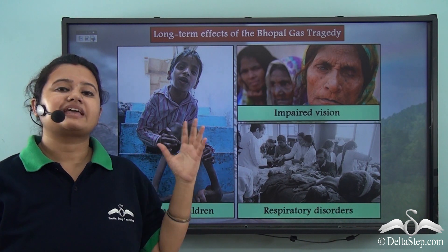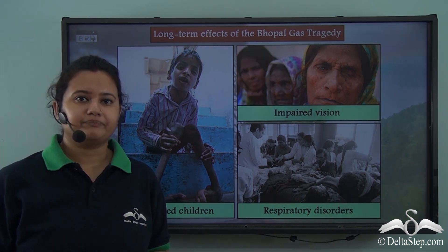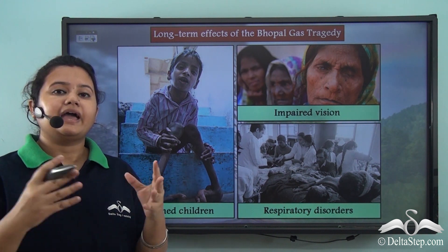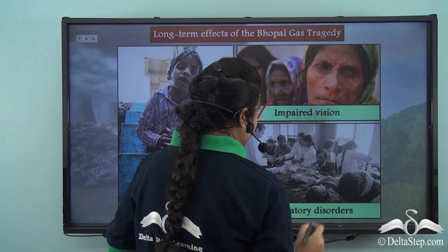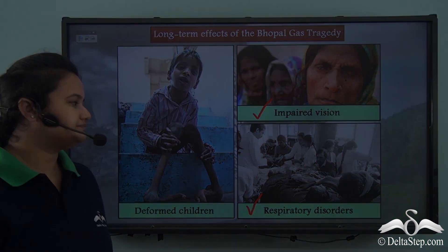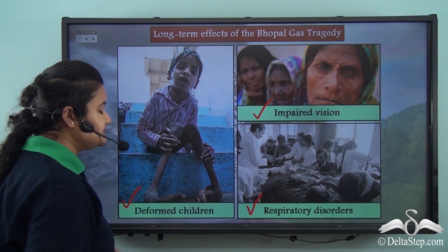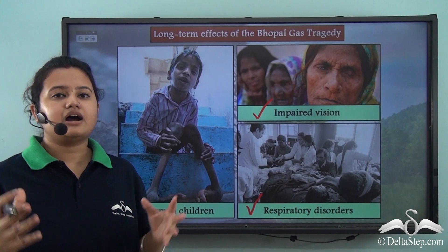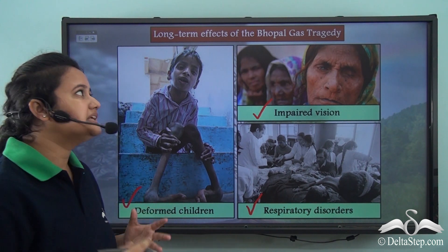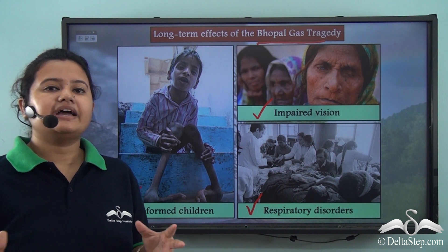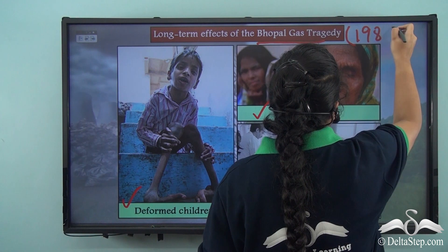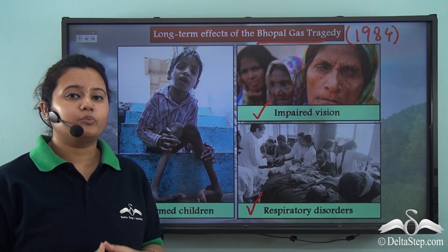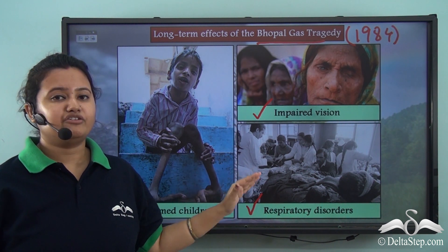The pollutants released in this catastrophe inflicted long-lasting effects on the citizens. Around 30,000 to 50,000 people survived this catastrophe, but the survivors suffered from health issues like impaired vision, respiratory disorders, and even cancers. For many upcoming years, children were born with deformities and other abnormalities. The newborn children even suffered from mental retardation. It has been more than 35 years since this incident, but the city of Bhopal is yet to recover from its long-lasting effects.